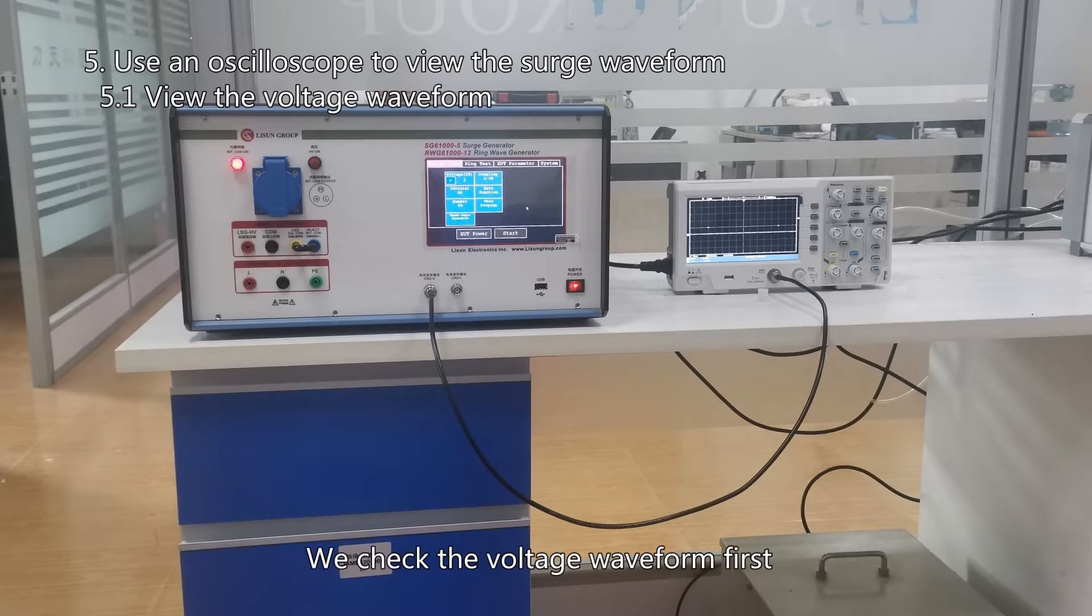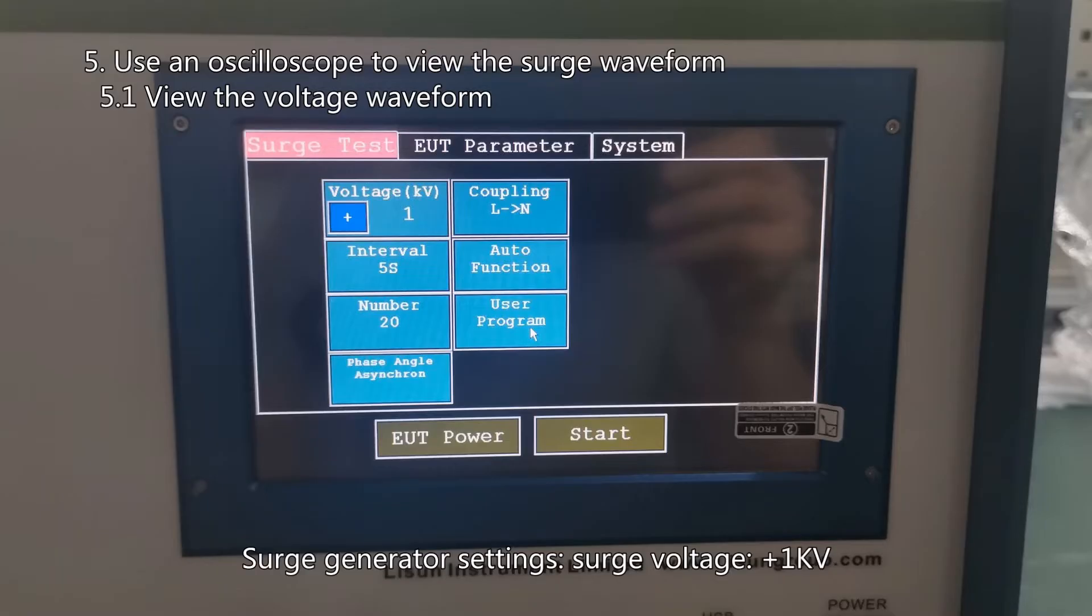We check the voltage waveform first. Surge generator settings: surge voltage, positive 1 kV.